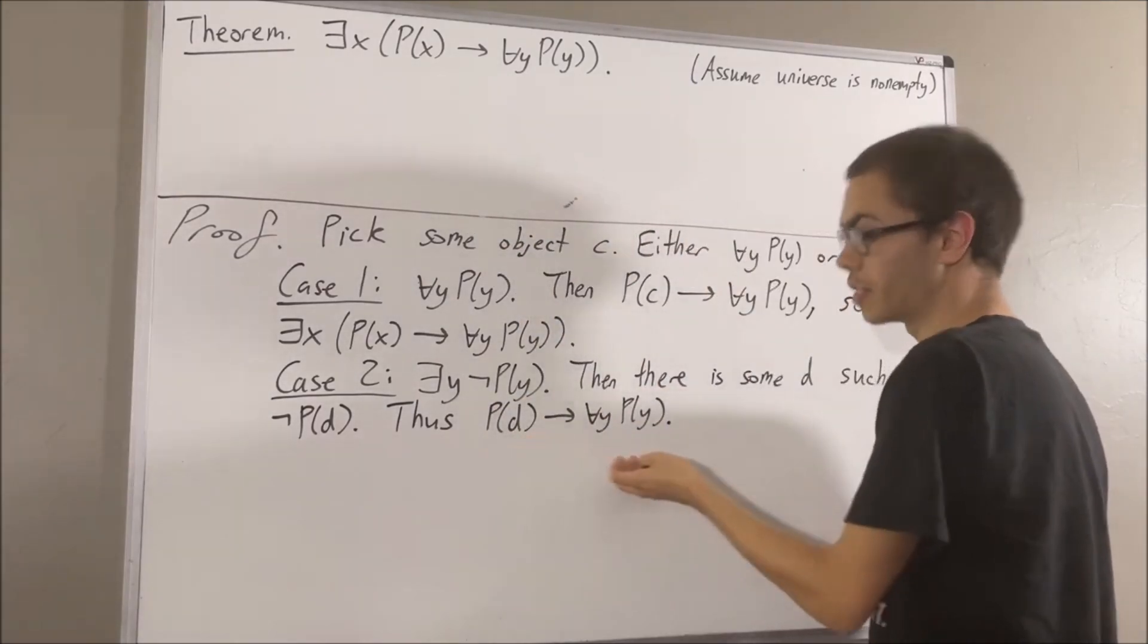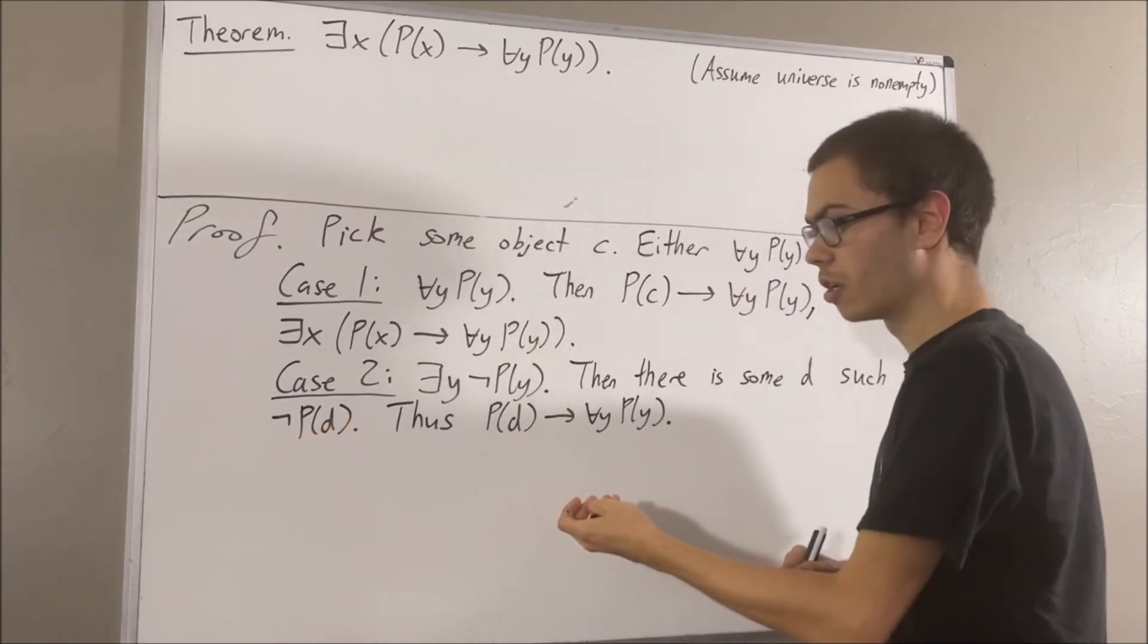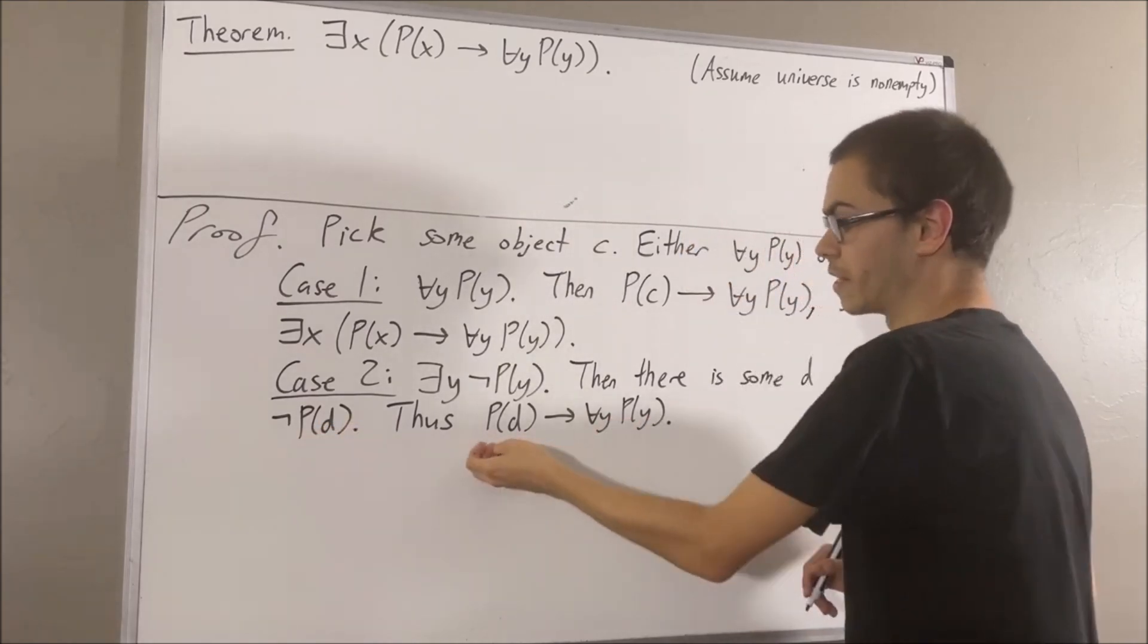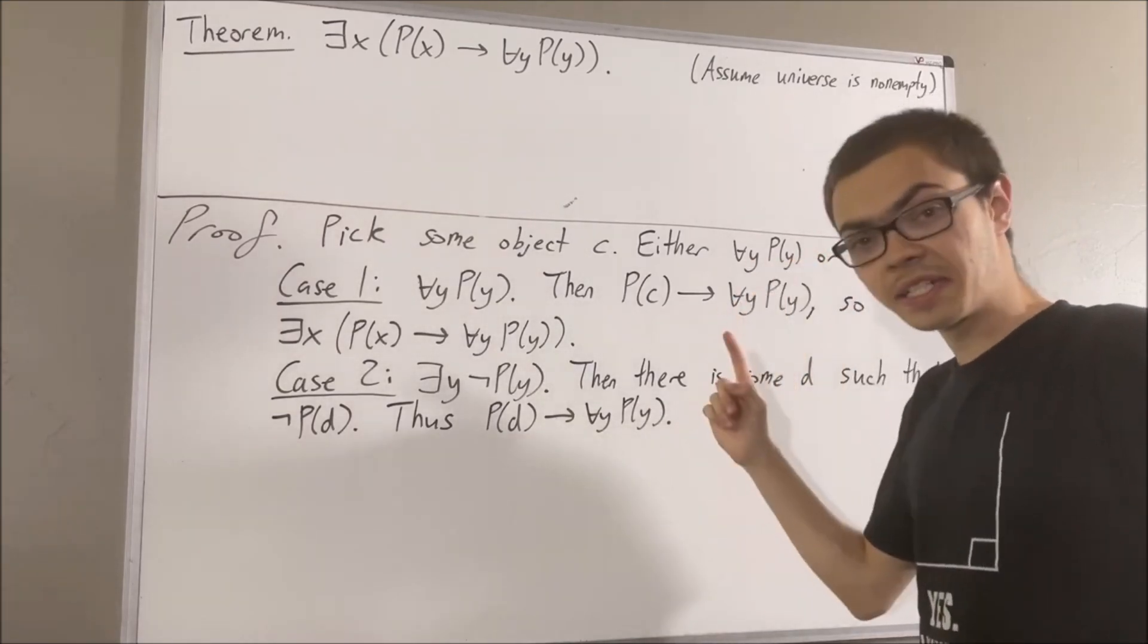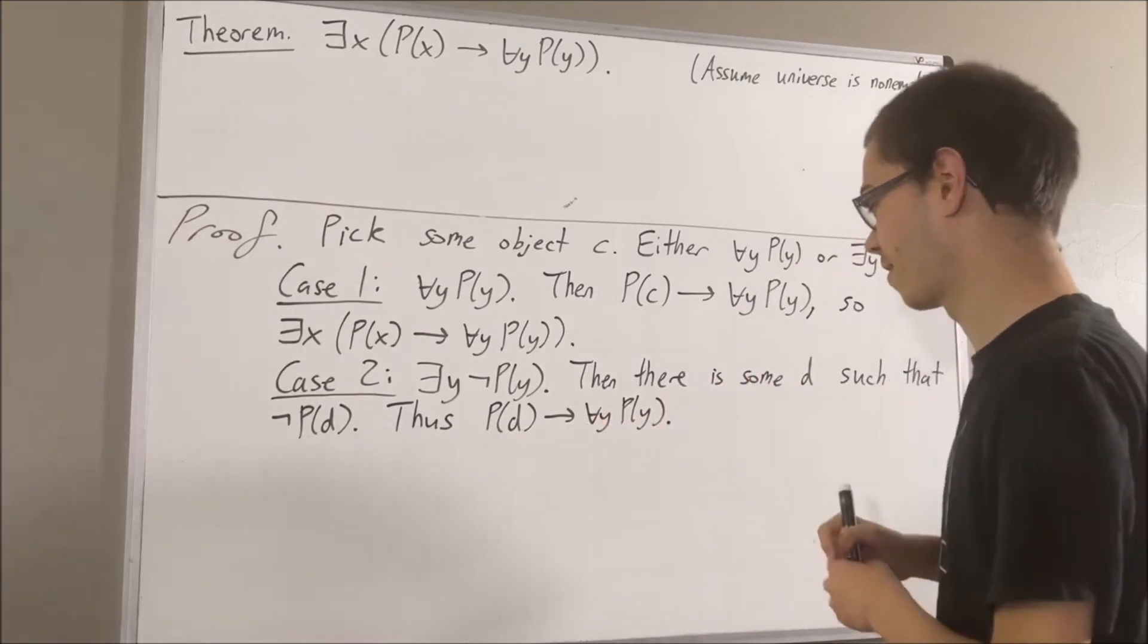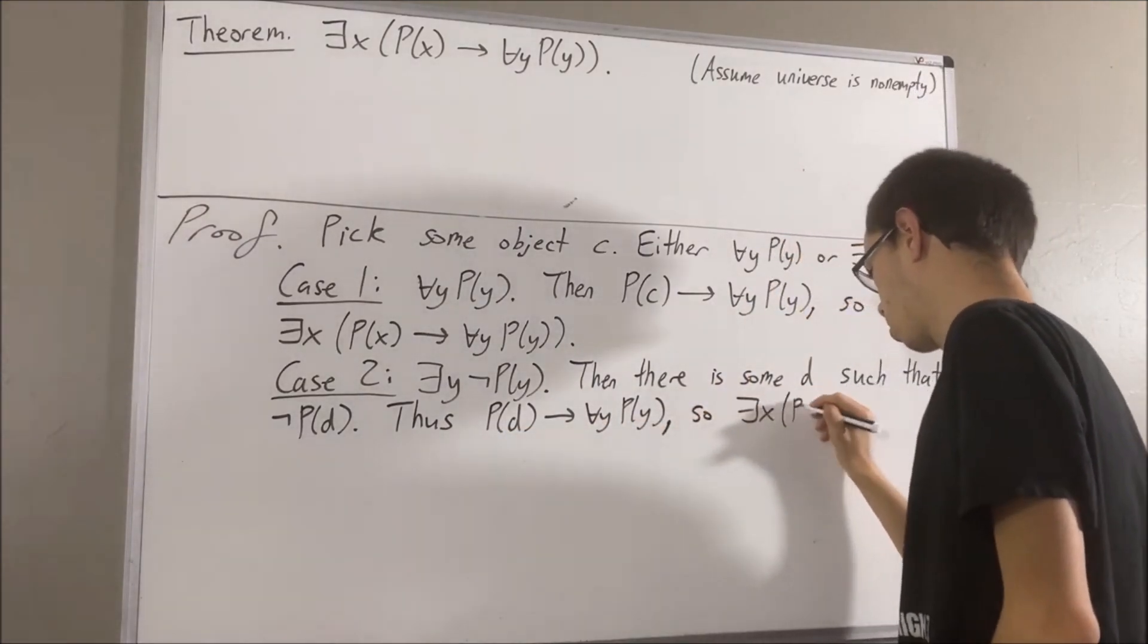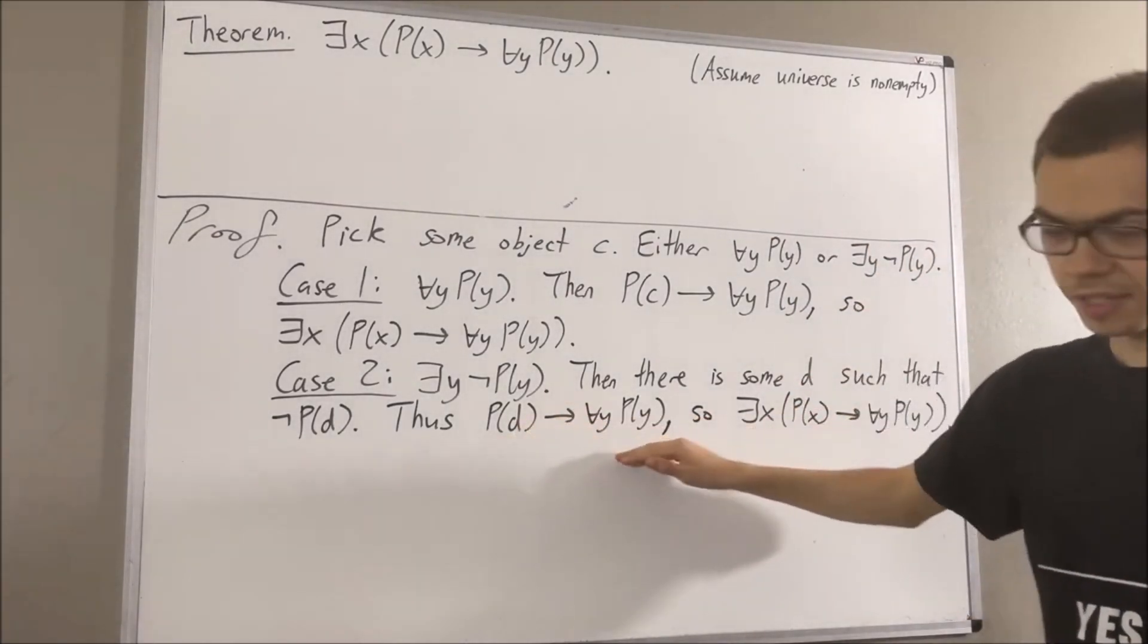The reason we know that this is true is because the antecedent is false. So sometimes we say that this is vacuously true. So, we see that there is at least one object X such that P of X implies for all Y, P of Y. In particular, if we take X to be D, then it works.